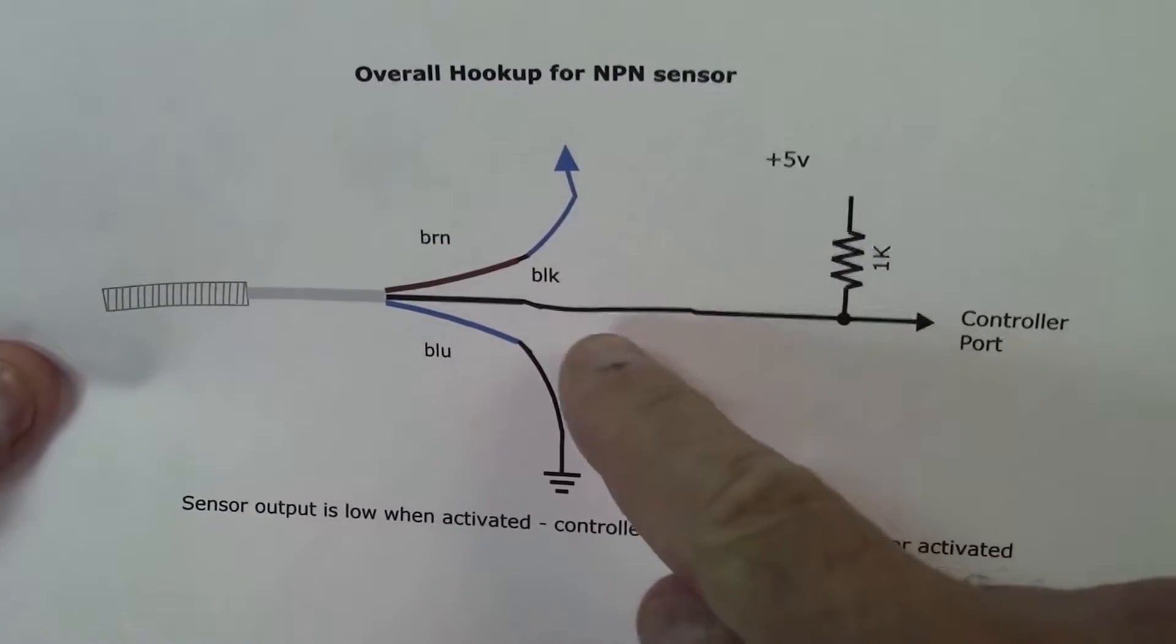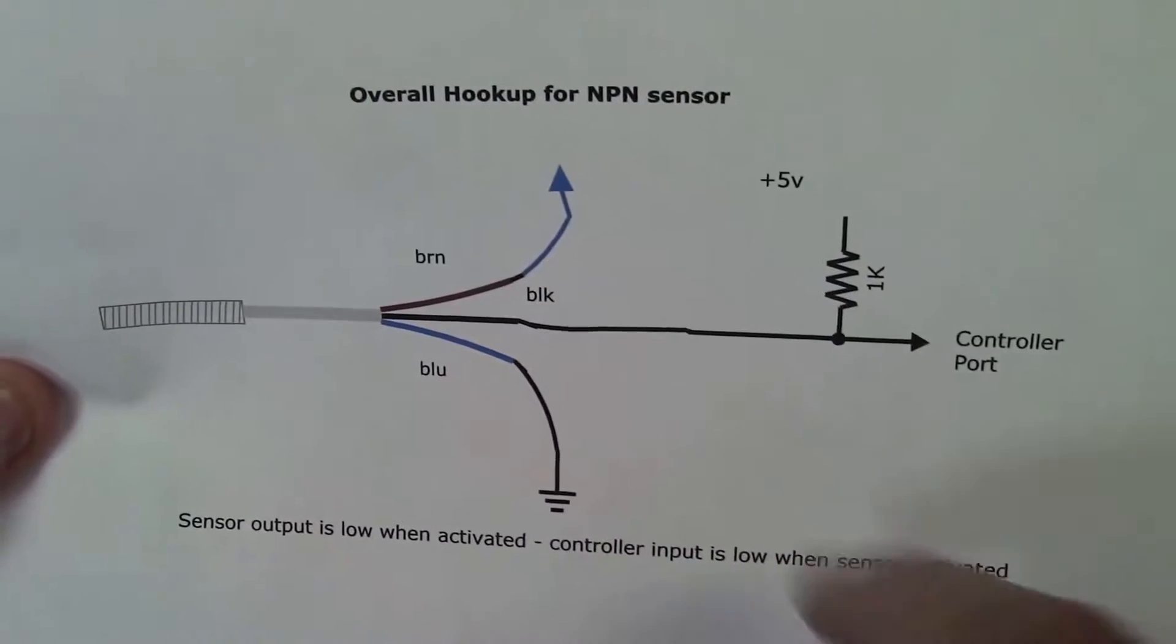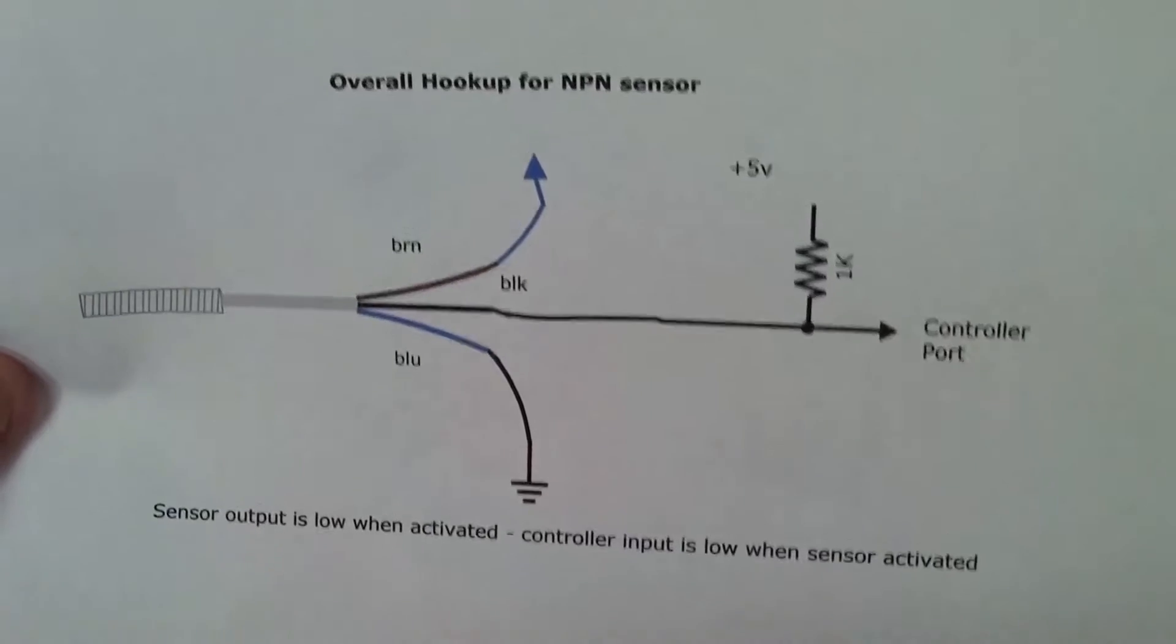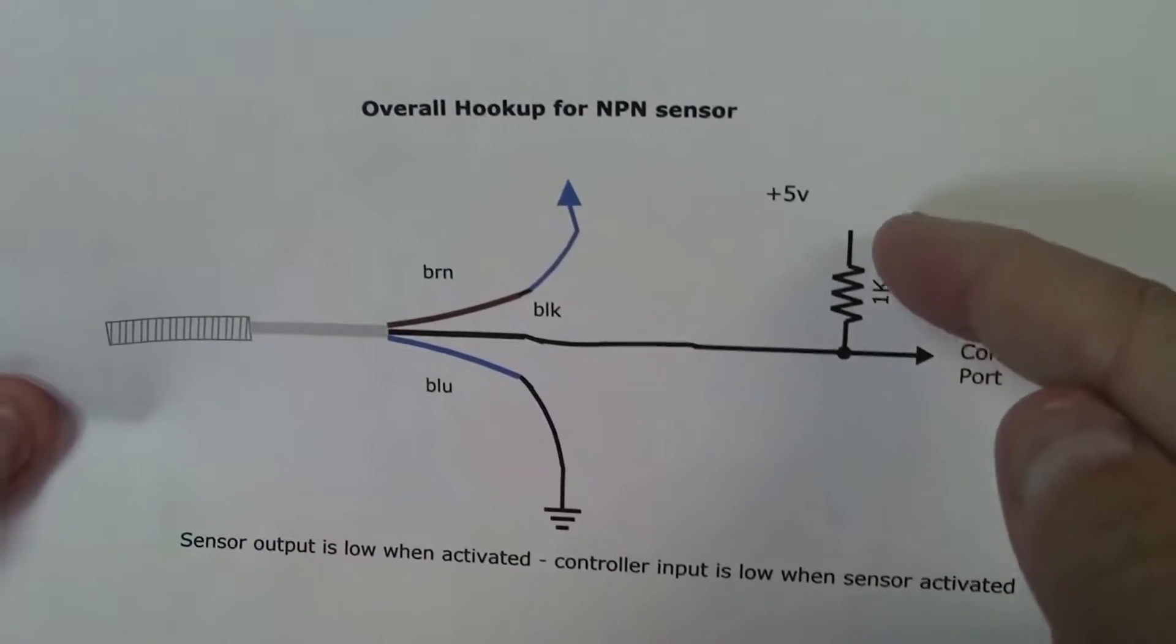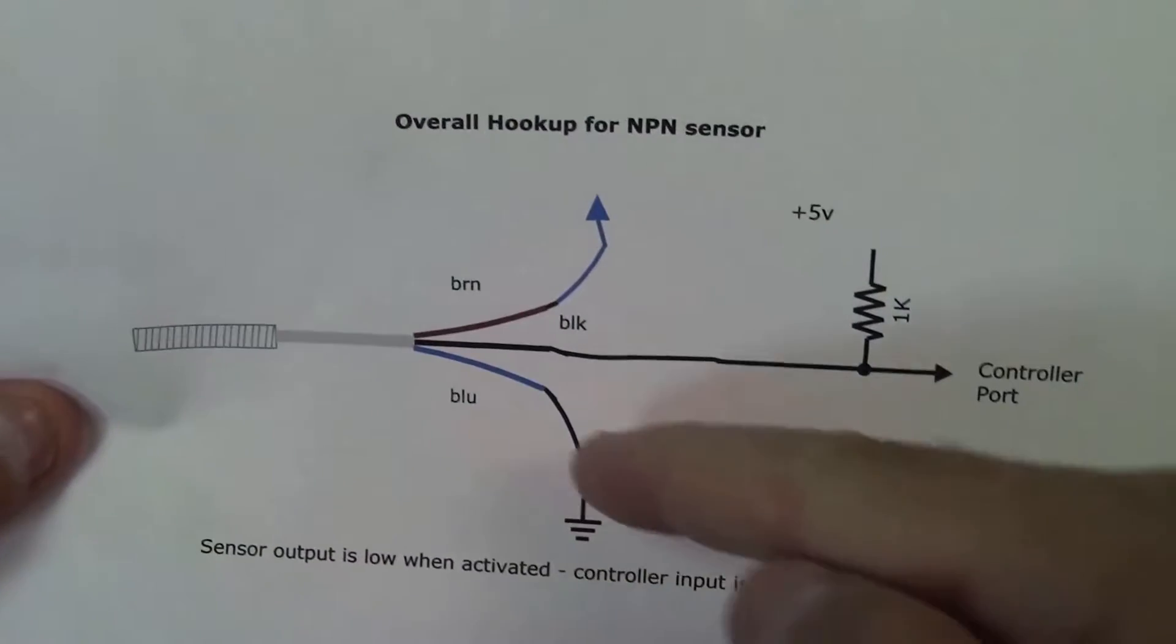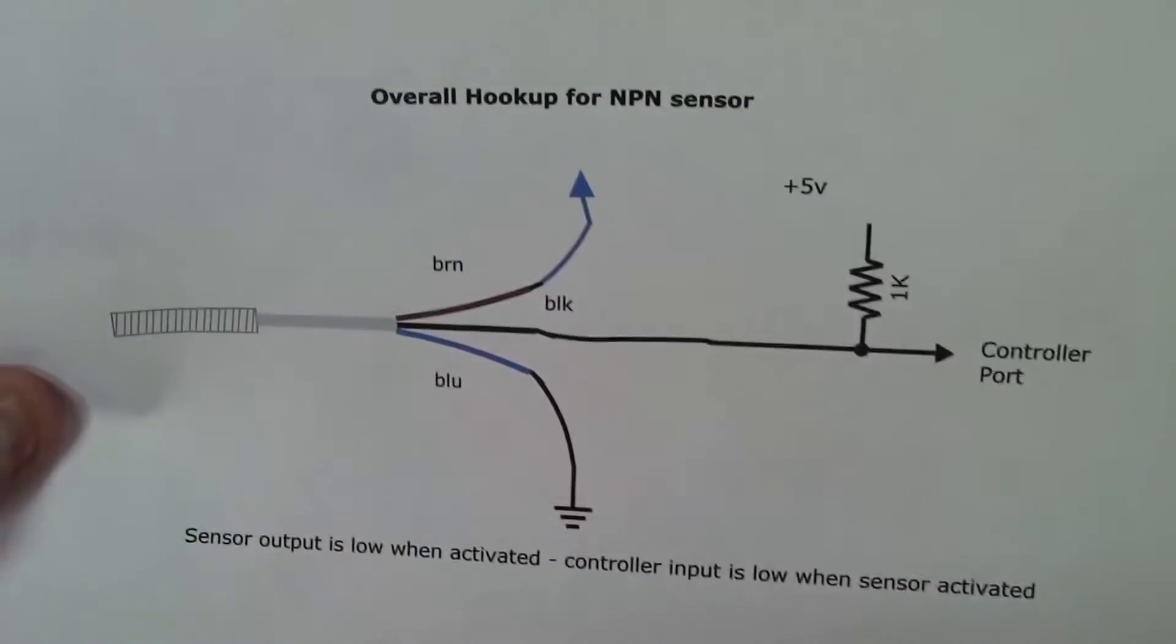All we have to do for the output terminal is hook it to a pull-up resistor to positive 5 volts on the Arduino, and our blue wire of course goes to common.